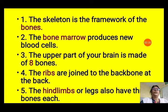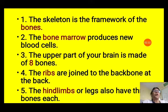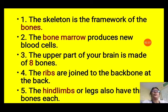Fourth blank: The ribs are joined to the backbone at the back. We know that ribs are joined at the back to the backbone. Fifth: The hind limbs or legs also have 3 bones each. Legs are also known as hind limbs, so we fill in 'hind limbs.'